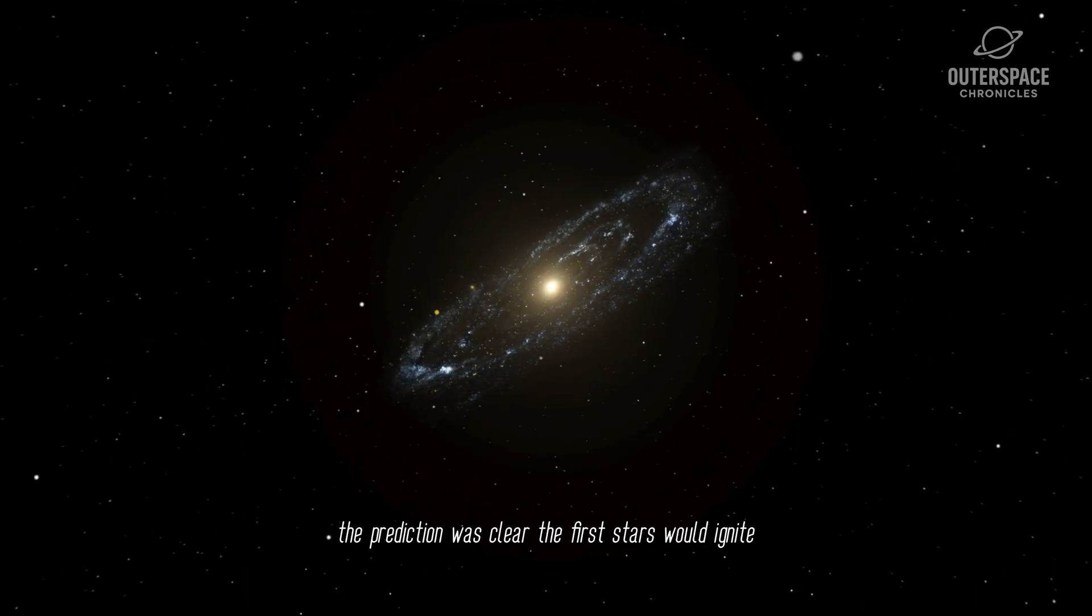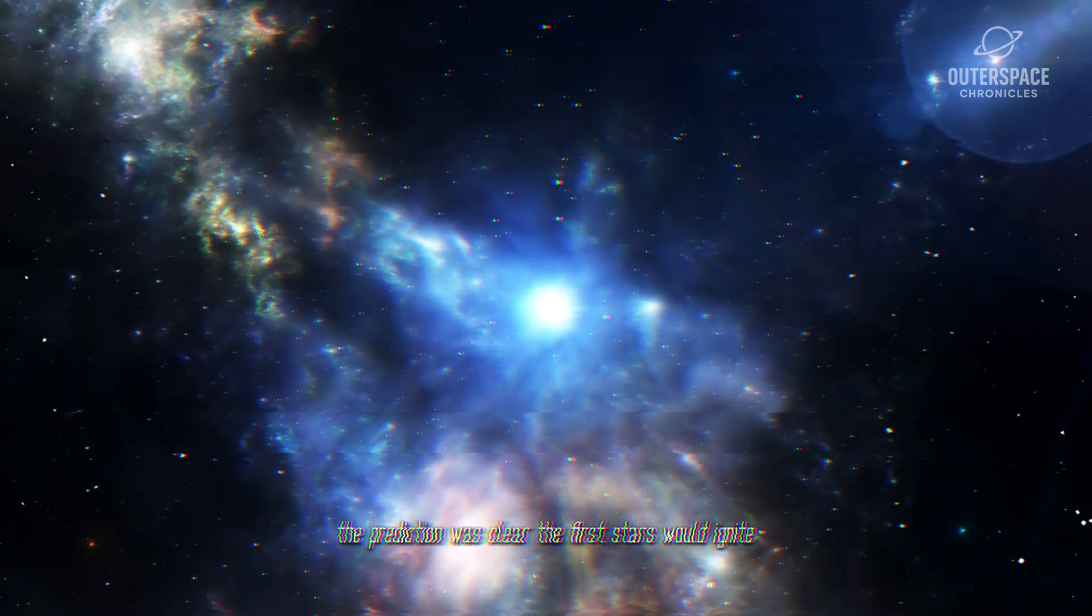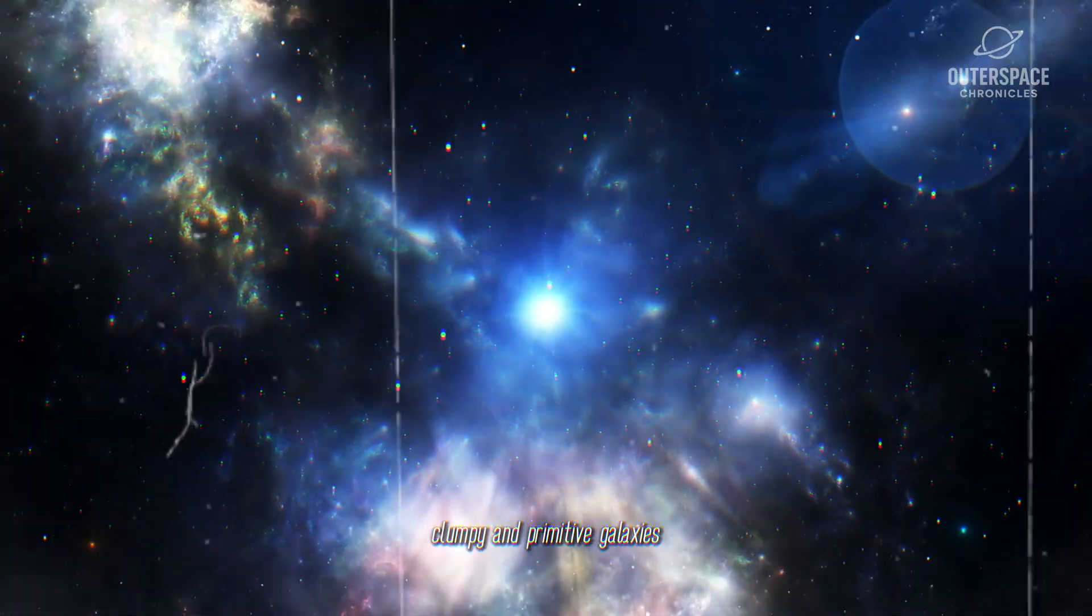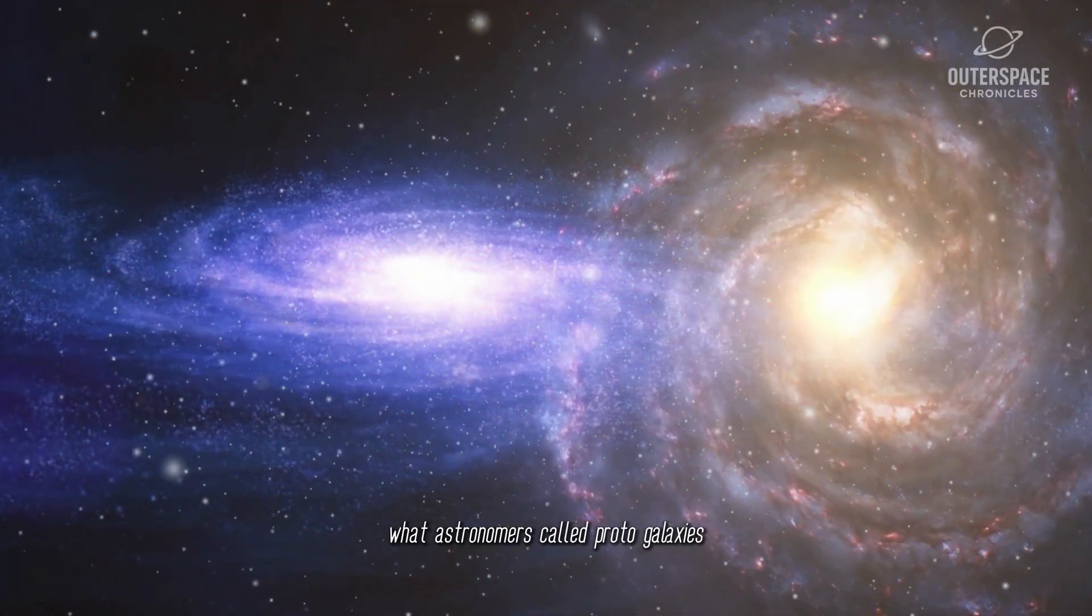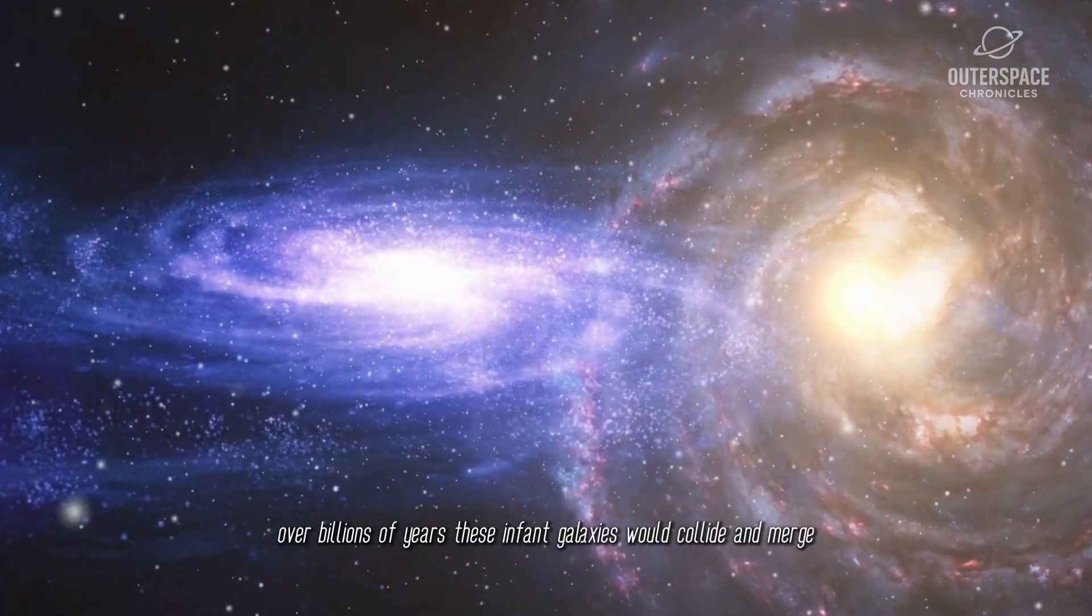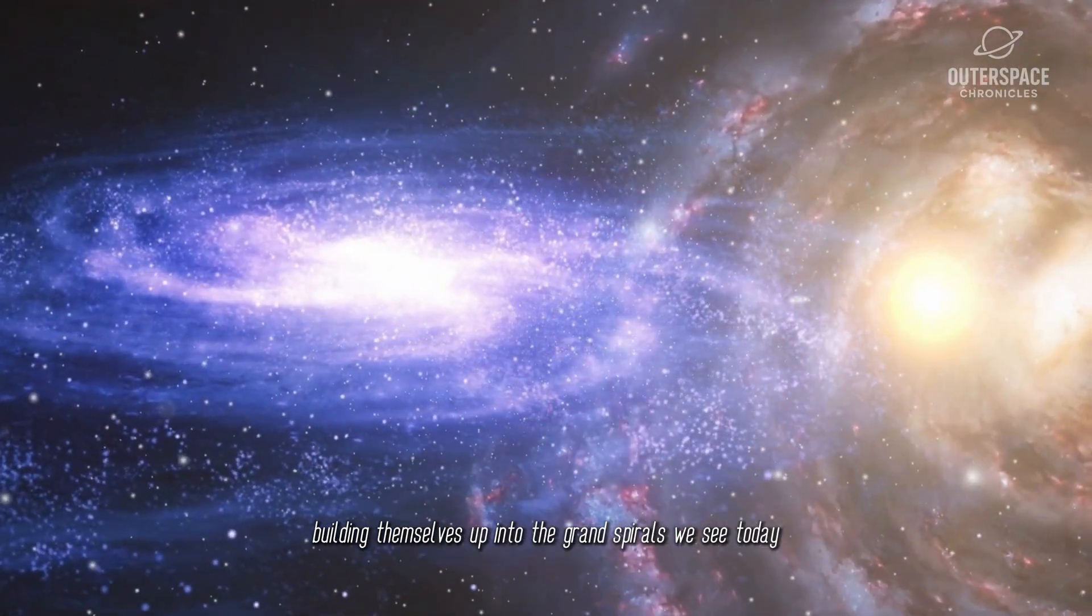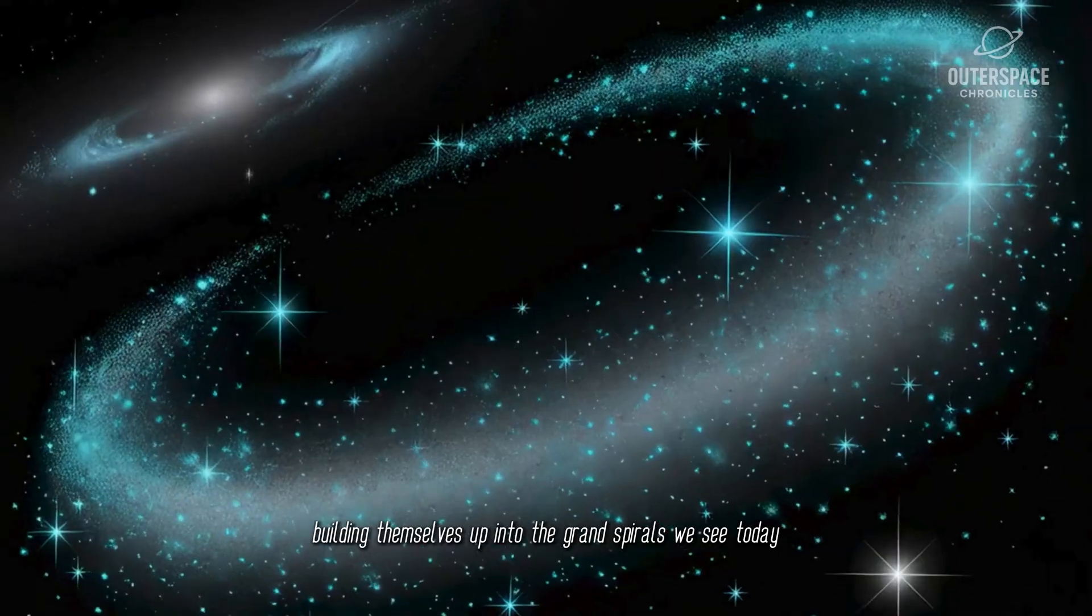The prediction was clear. The first stars would ignite, followed by the first small, clumpy, and primitive galaxies, what astronomers called proto-galaxies. Over billions of years, these infant galaxies would collide and merge, building themselves up into the grand spirals we see today, like our own Milky Way.